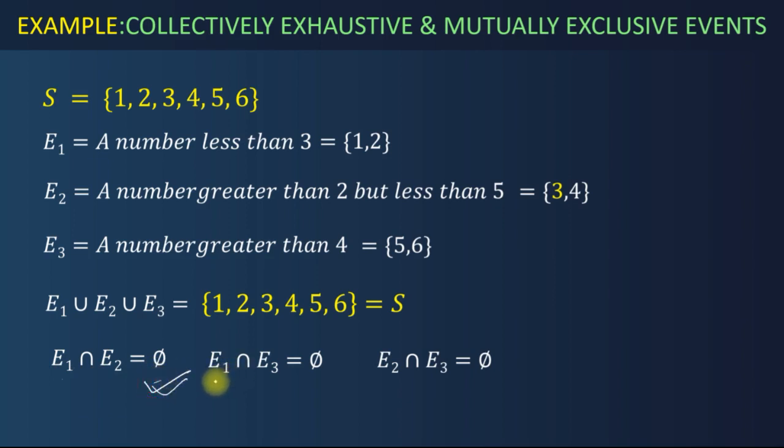Similarly, intersection of E1 and E3 will have also null set because there is no common element between E1 and E3. Similarly, there is no common element between E2 and E3, hence their intersection is also a null set. So we have checked that all events of this sample space are pairwise disjoint sets, so we can say that they are mutually exclusive events.